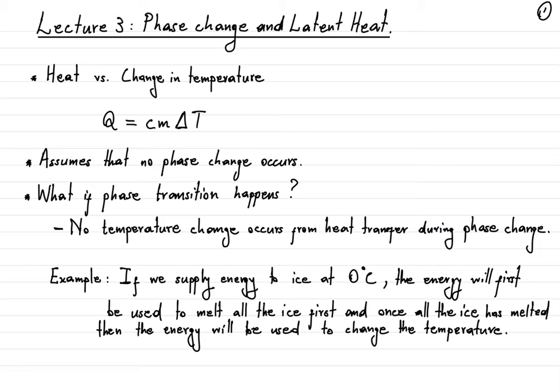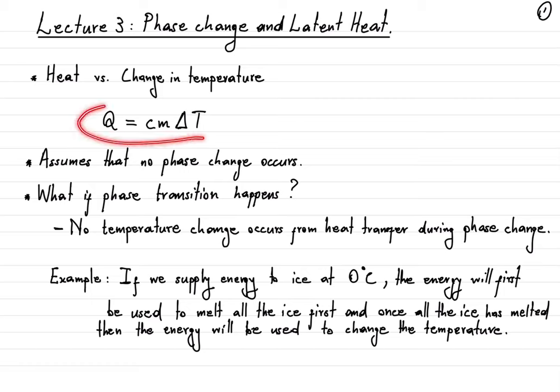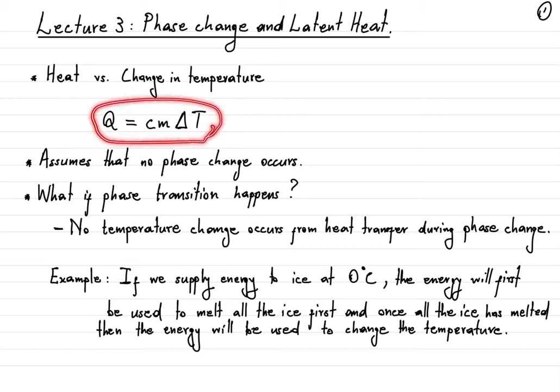For instance, what happens when we reach a temperature where the object changes its phase — let's say from being a solid to a liquid, or from being a liquid to a gas, or the other way around, gas to liquid or liquid to solid? The point is, this equation has its limitation. Effectively, what we have assumed is that the changes in temperature we are looking at do not include phase change.